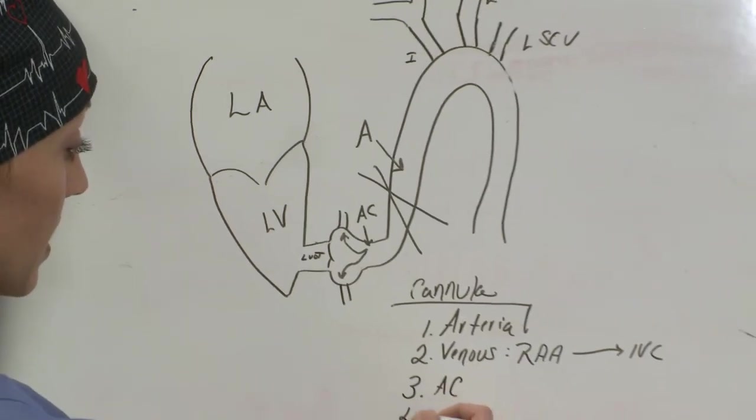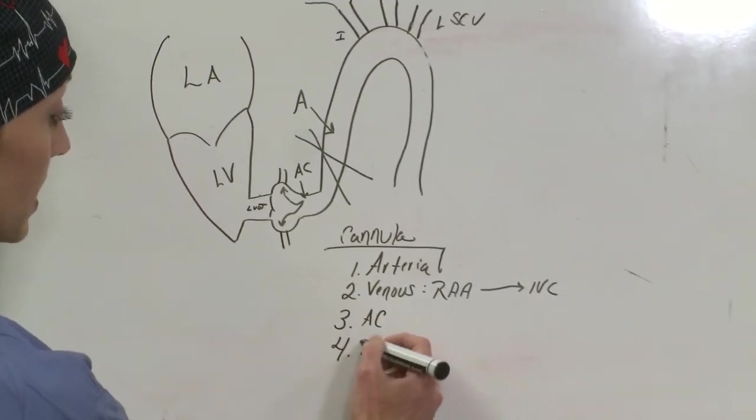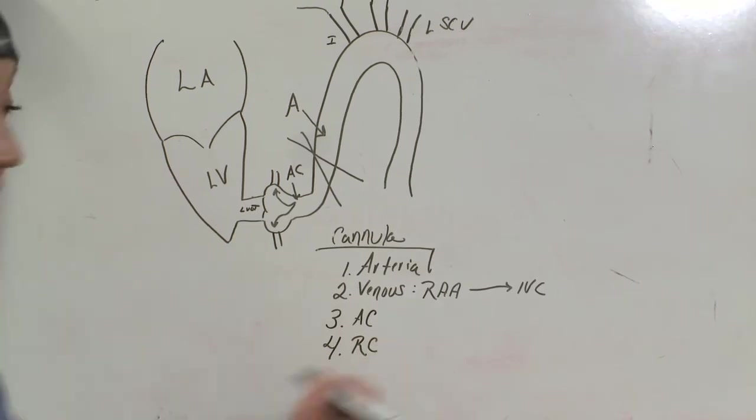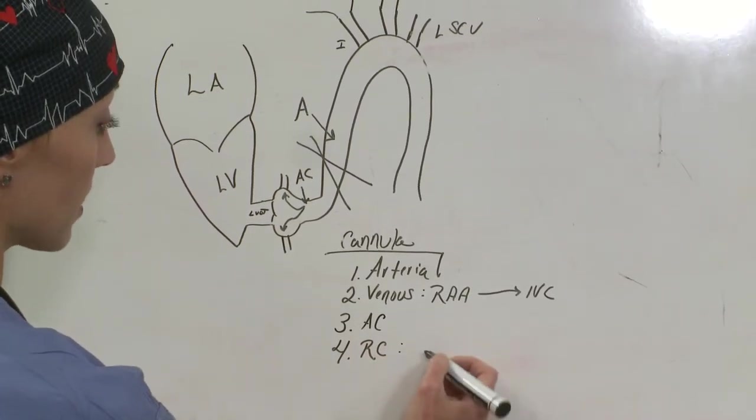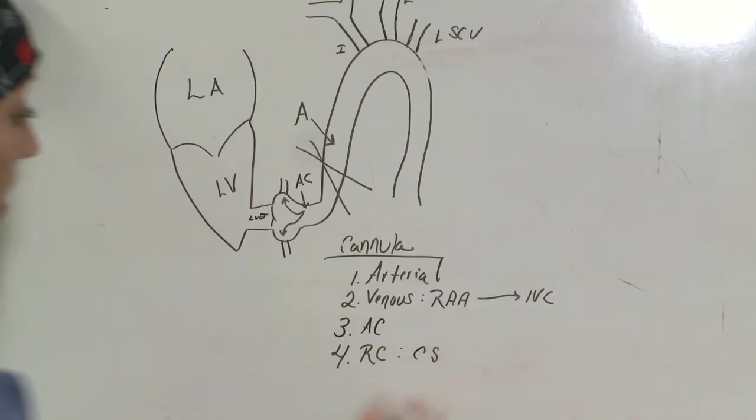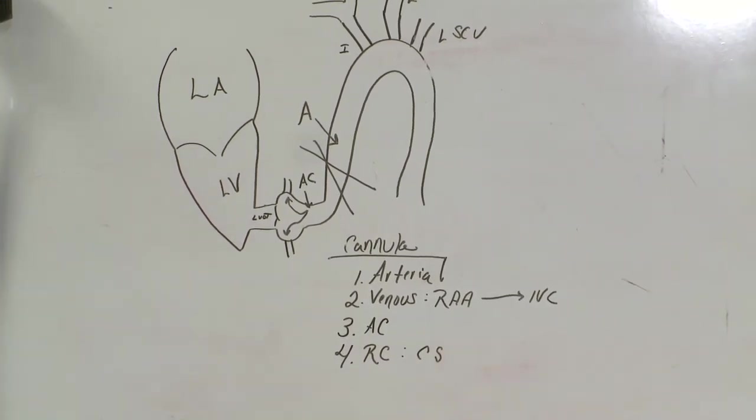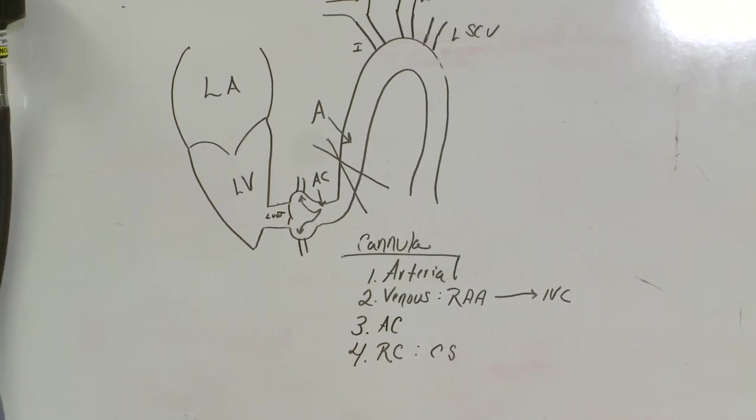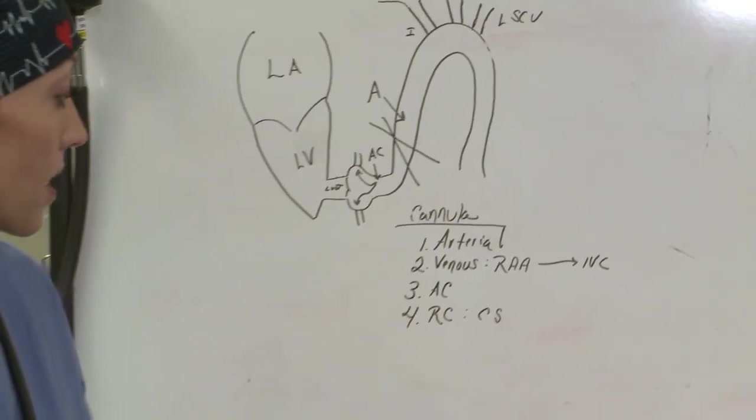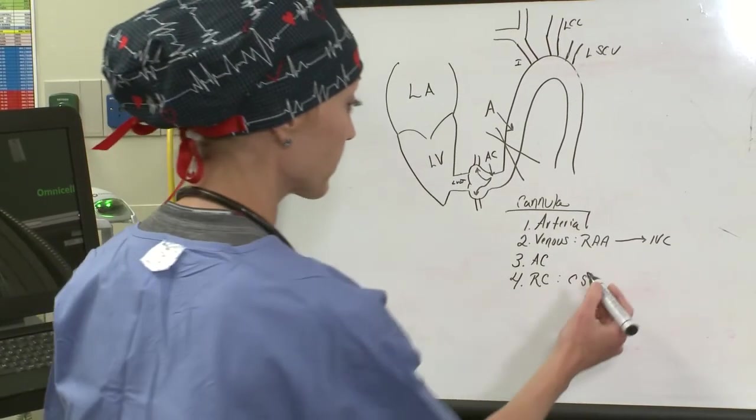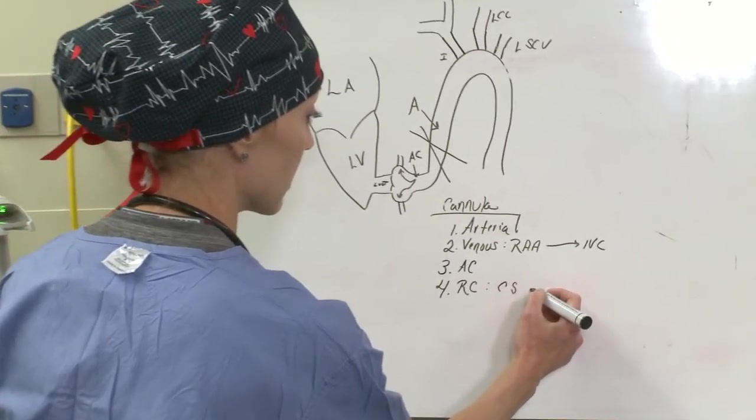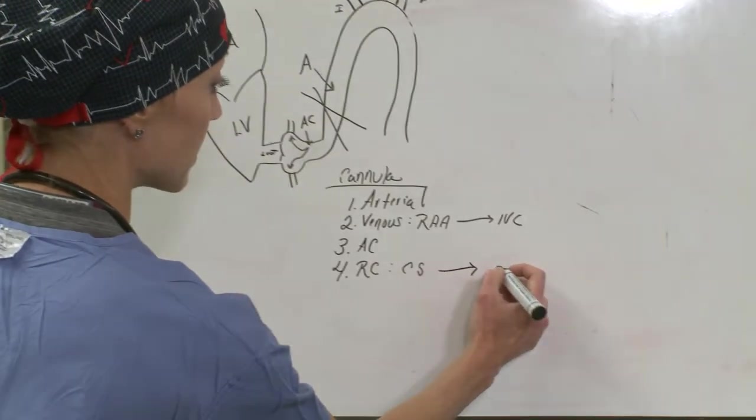The fourth cannula that you can place, if you needed it, would be a retrograde cardioplegia, okay? So the location of that is going to be in your coronary sinus, and that's basically the venous system for your coronary arteries. So indications for this retrograde cardioplegia—let's talk about that.